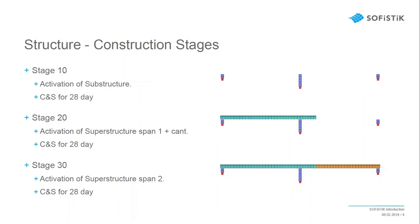In stage 10, only the substructure is activated, with creep and shrinkage for 28 days. Stage 20 activates the first span and a cantilever for the second span, also with creep and shrinkage for 28 days. Stage 30 activates the last part of span 2, again with creep and shrinkage for 28 days.